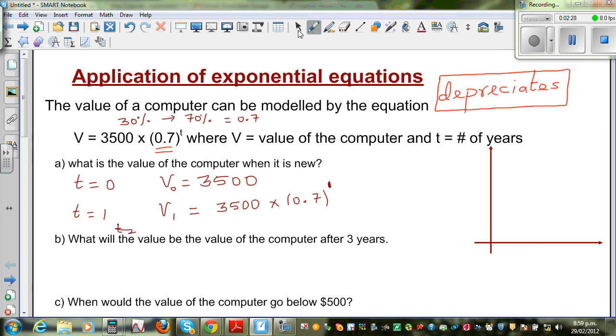So when t is equal to 2, what would you do? v2 will be 3,500 times, this is 0, this is after one year, 0.7, will be after one year.